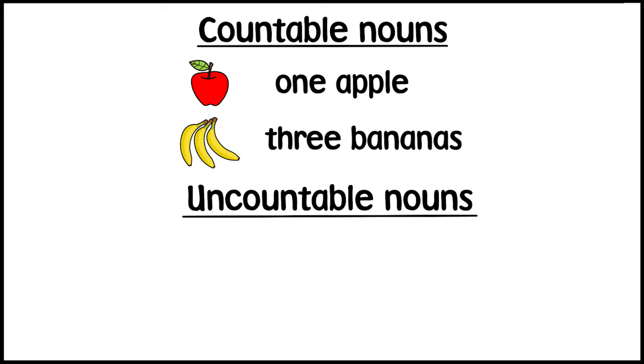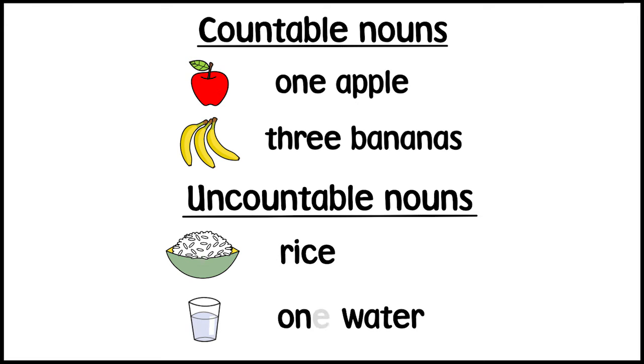Uncountable nouns are things we can't count. We don't use numbers to say how many. Rice. Water.